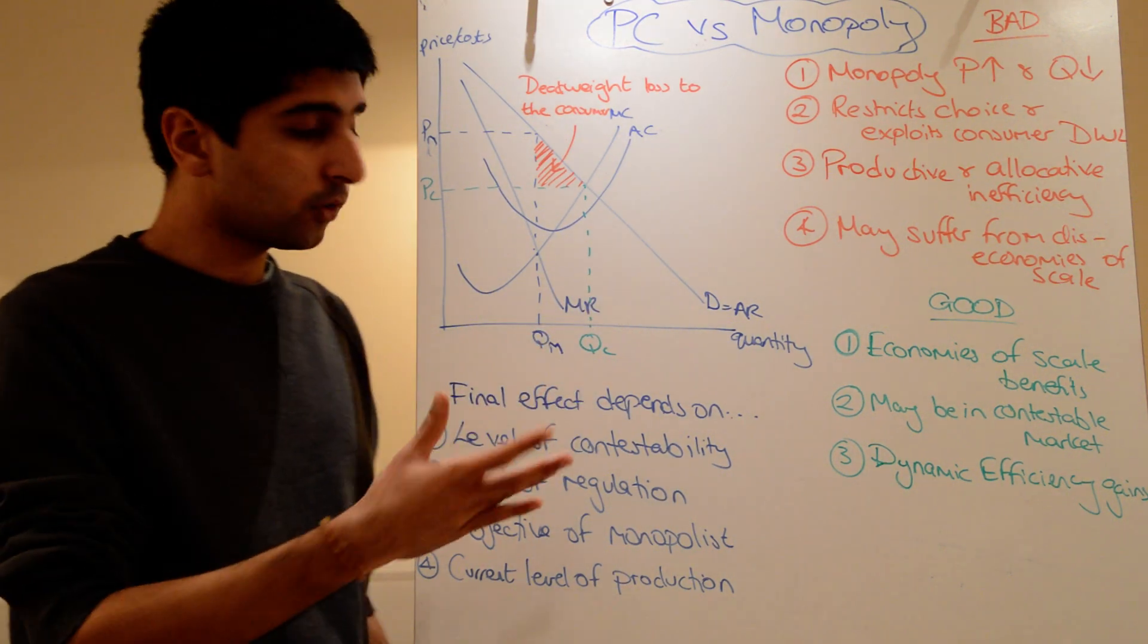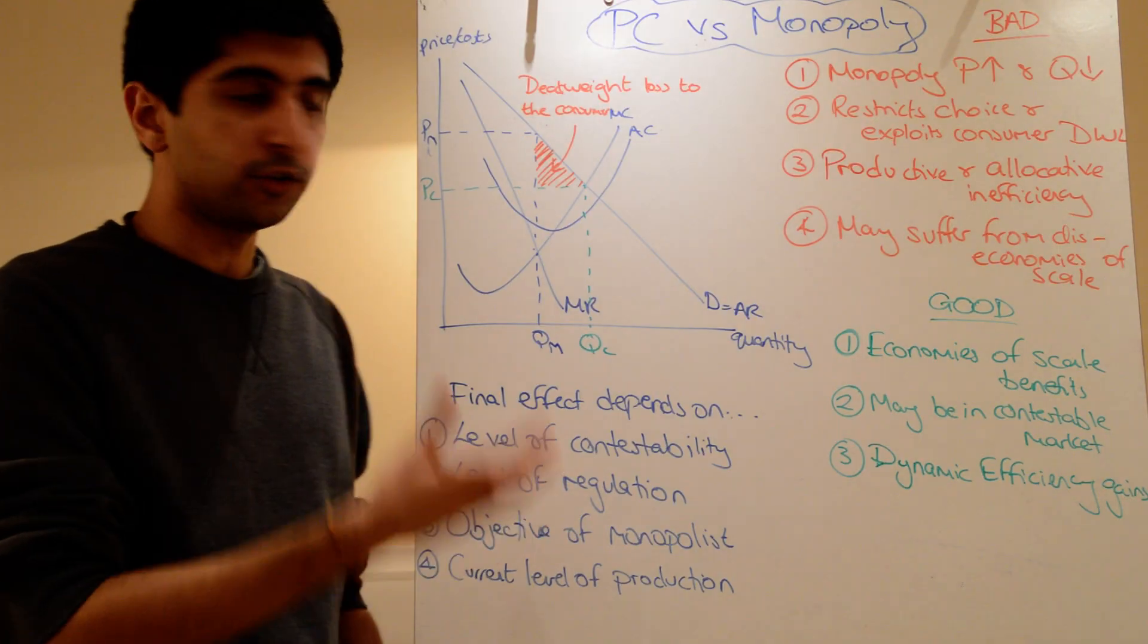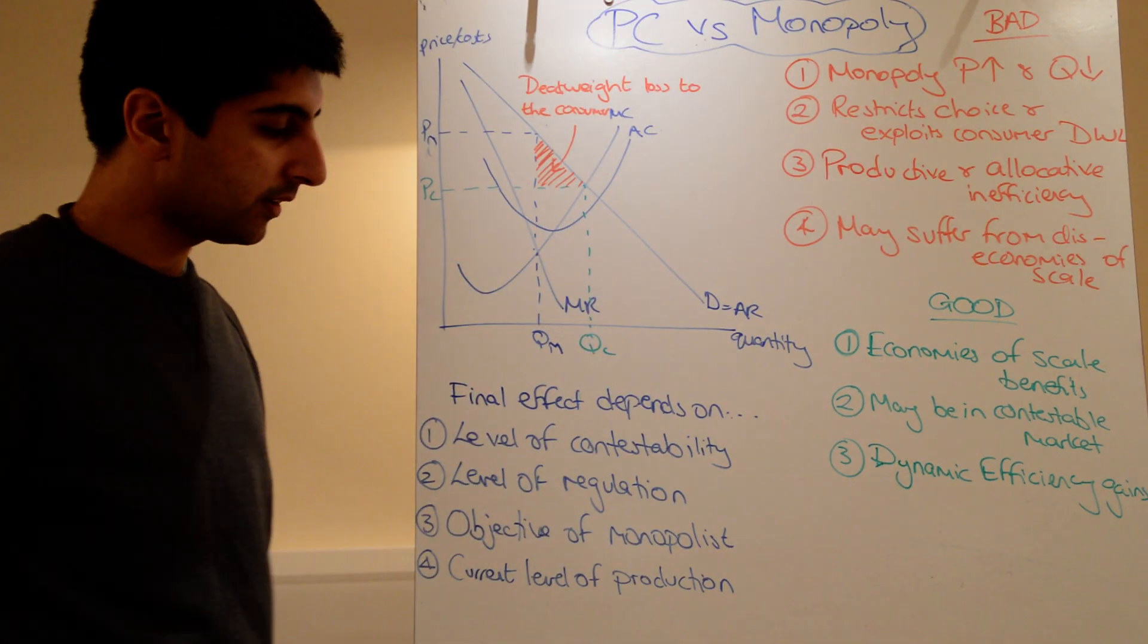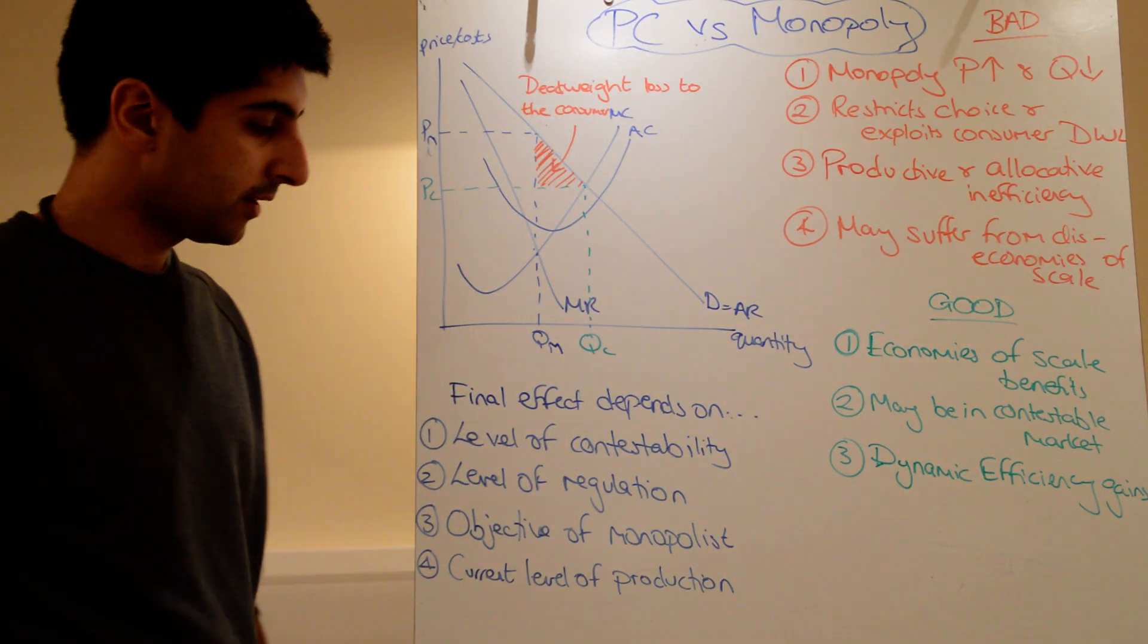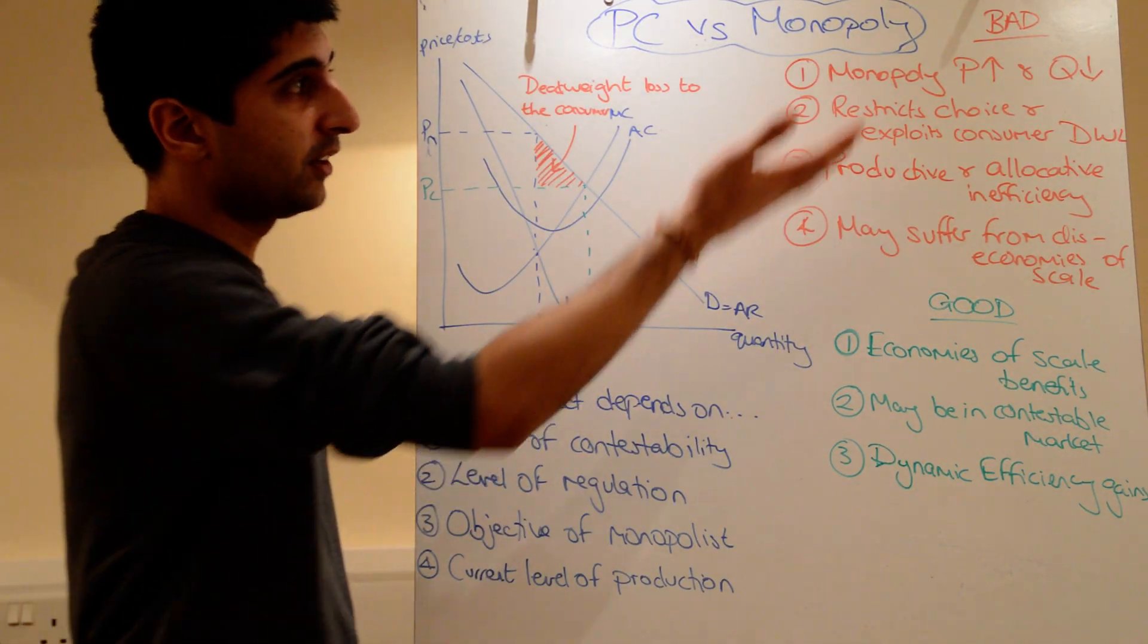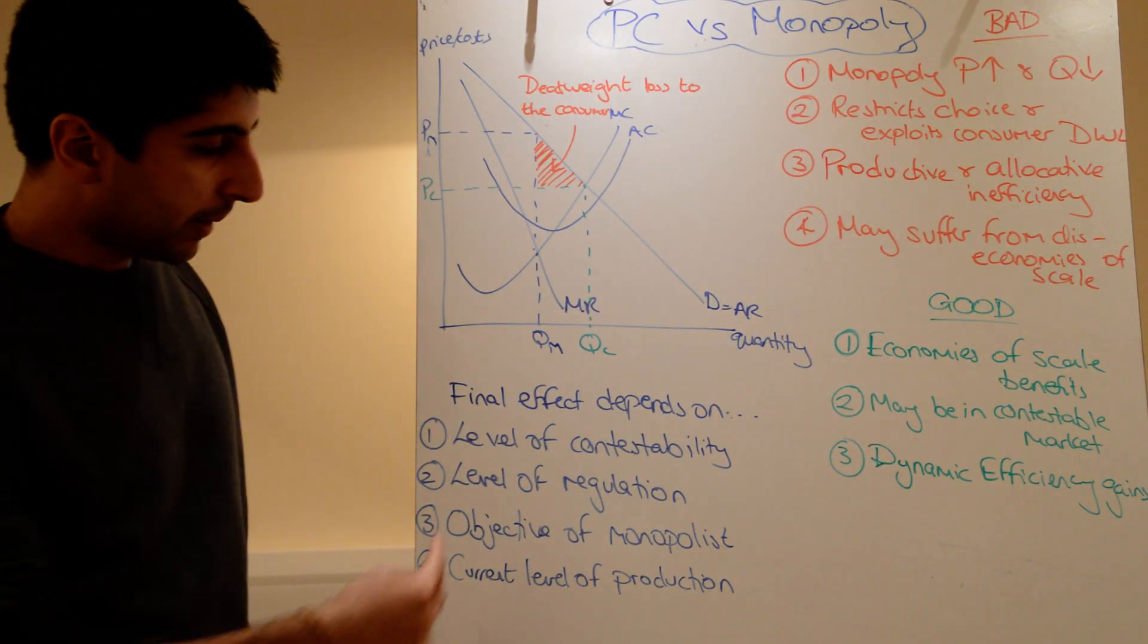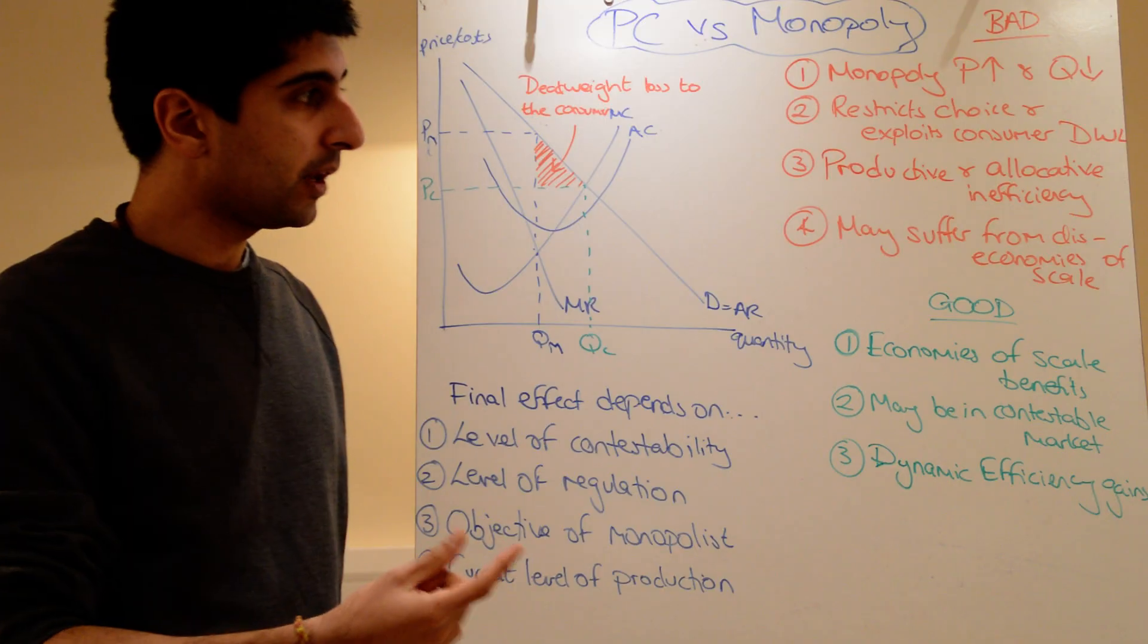But what does the final effect depend on, whether monopoly is good or bad? Depends on the level of contestability, so just how contestable is the market, how great are the entry barriers. Depends on the level of regulation. Obviously, the more regulation, potentially the less we suffer as a result of these bad points.